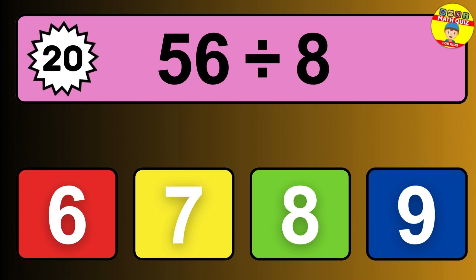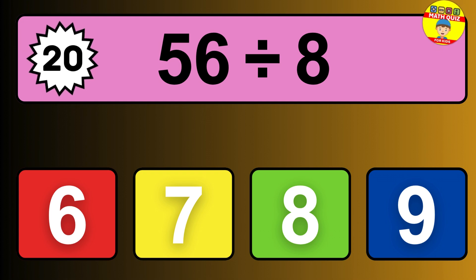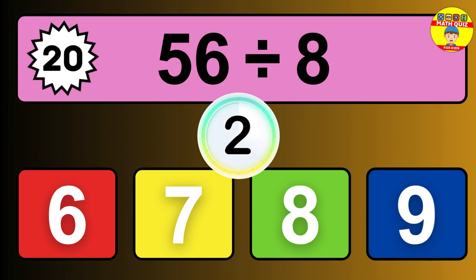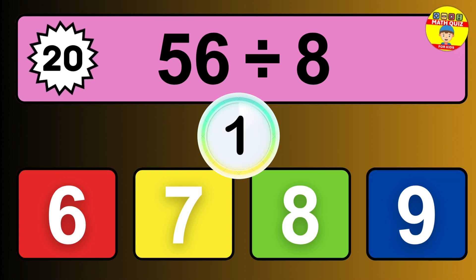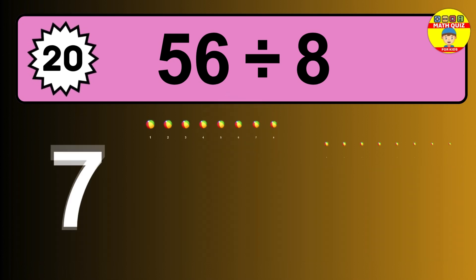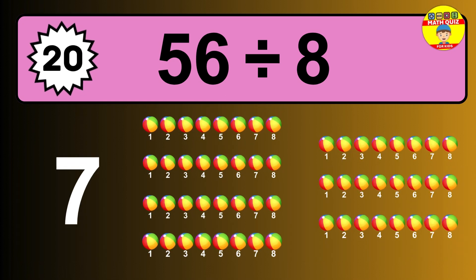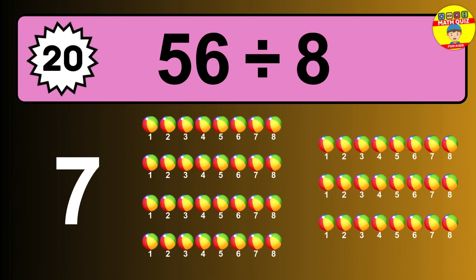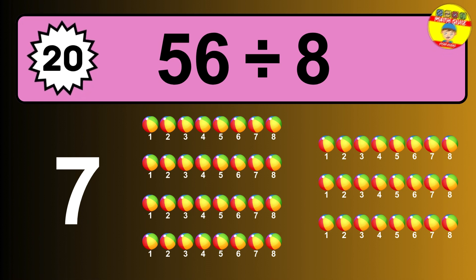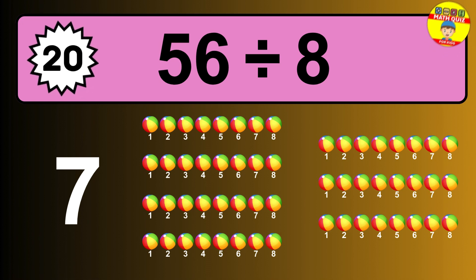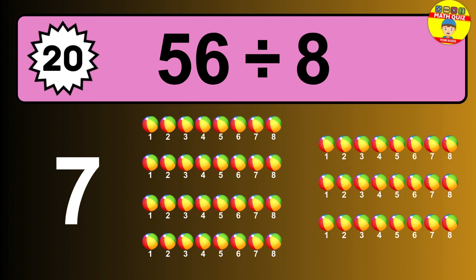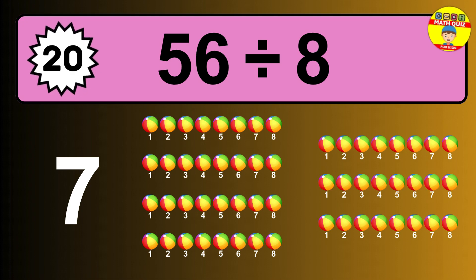56 divided by 8 is... time to think. Let's go to the solution. Divide the number 56 by 8. Each group contains 8 units. So dividing 56 by 8 results in 7 equal groups. Thus, the result is... 56 divided by 8 equals 7.